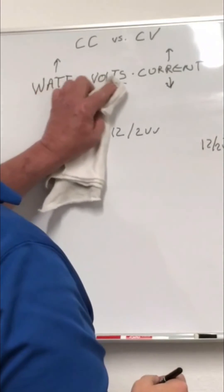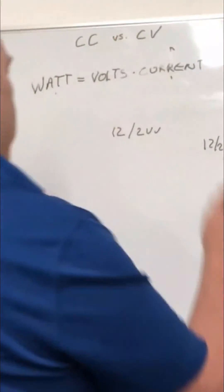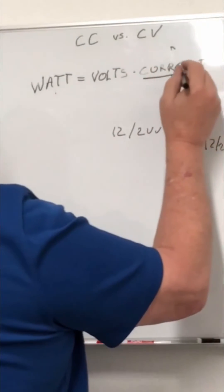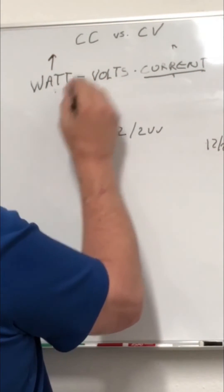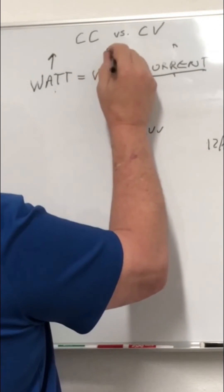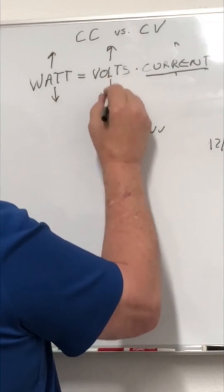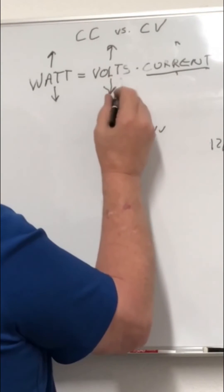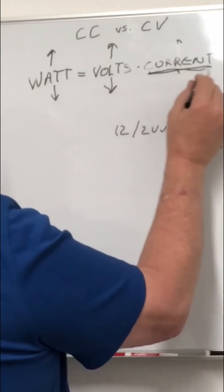Now with constant current, it's just the opposite. If you're keeping your current constant and your wattage goes up, meaning you add more LEDs, then your voltage will go up. And if your wattage goes down, then your voltage has to go down to balance each side of the equation and keep your current constant.